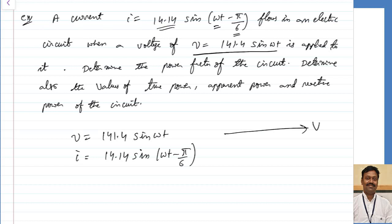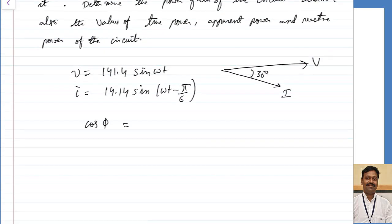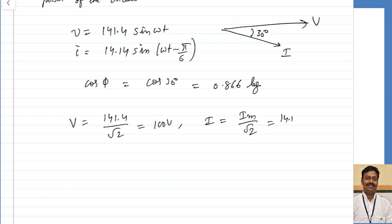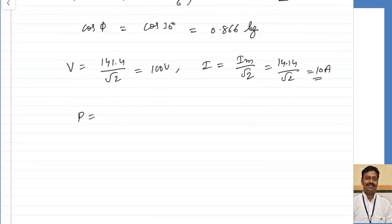From this, taking voltage as reference, the current is lagging by π/6 or 30°. So φ = 30°, and cos φ = cos 30° = 0.866 — this is a lagging power factor. The RMS voltage V = 141.4/√2 = 100 V. The RMS current I = 14.14/√2 = 10 A. True power P = V·I·cos φ = 100 × 10 × 0.866 = 866 W.